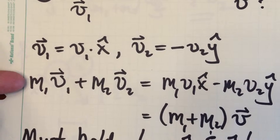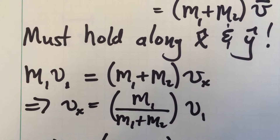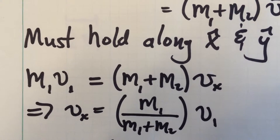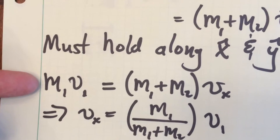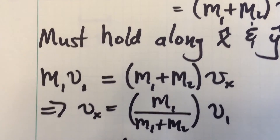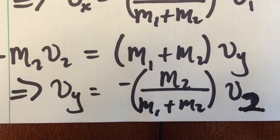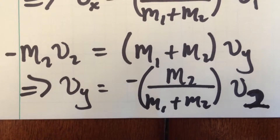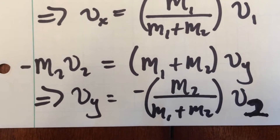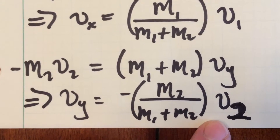Using conservation of momentum, we write the initial momentum equal to the final momentum. This equality must hold for the x and y components separately, giving us two equations. Along the x direction, the only initial momentum is m1 v1, and that equals the total mass times vx, the x-component of the final velocity. Similarly for the y direction, comparing initial and final momentum along y, we find the y-component of the final velocity is m2 over the sum of masses, times v2 — the initial velocity of particle two along y.